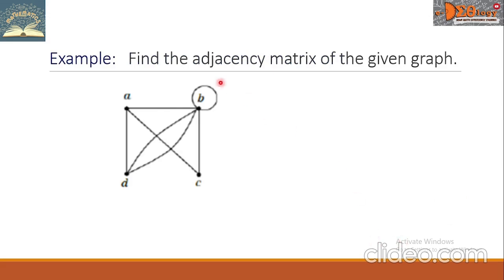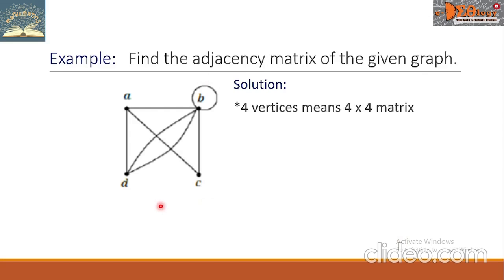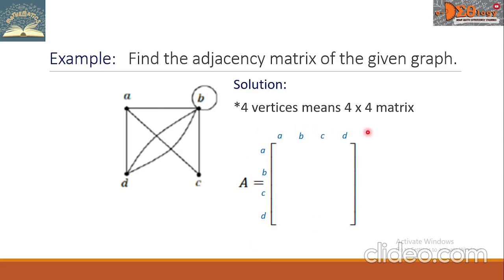Example: find the adjacency matrix of the given graph. We have here 4 vertices, and that means we should have a 4 by 4 matrix. First, let us draw a blank matrix with the labels accordingly. Now, let us begin with AA. We are looking for a loop in the vertex A. There is no loop here, so we write 0.